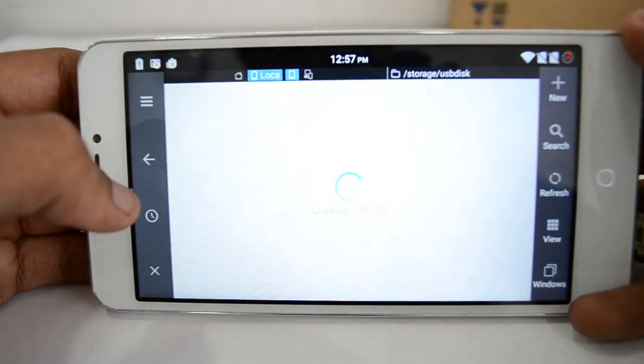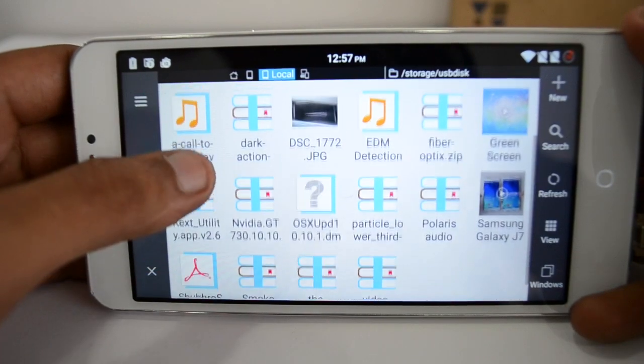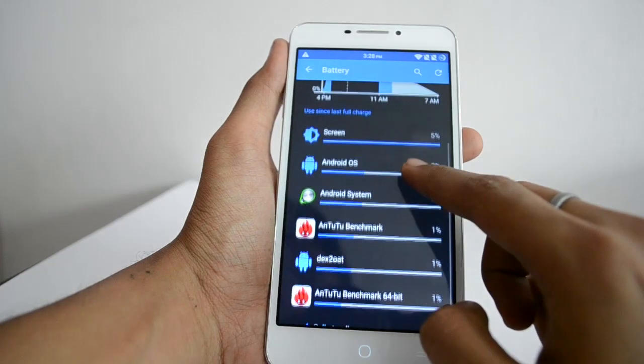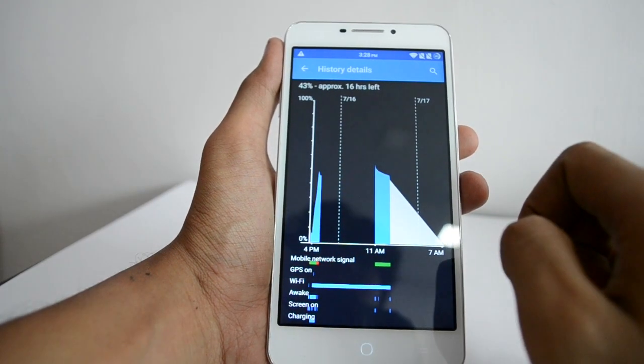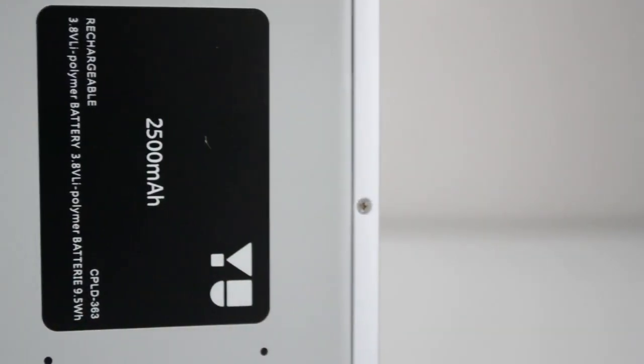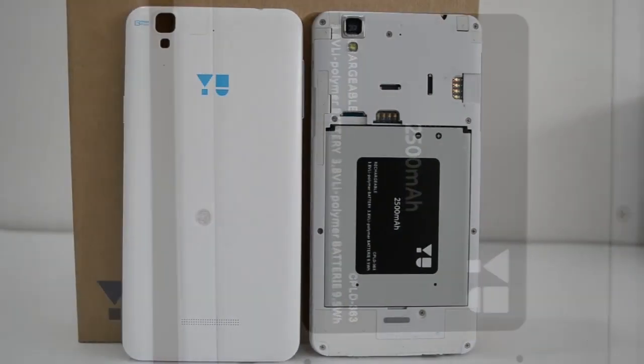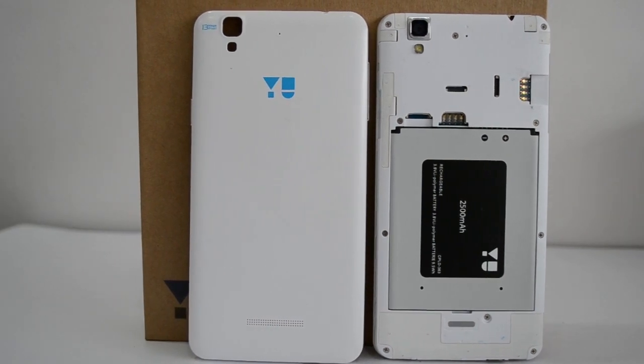Talking about the battery life of the Eureka Plus, there are no major improvements in the battery capacity. It still uses a 2500mAh battery that was there on the Eureka as well. The battery life that you can expect is very similar to what you can get with the Eureka.